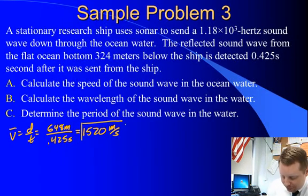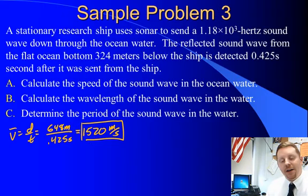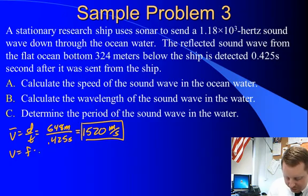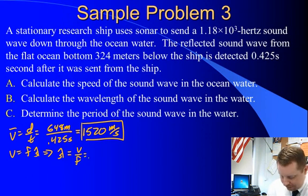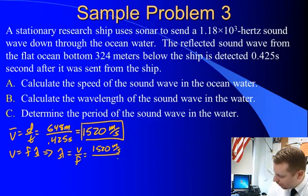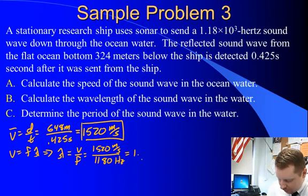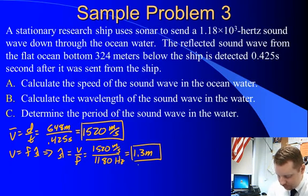Now for part b, calculate the wavelength of the sound wave in the water. In this case, we can use our wave equation, v equals frequency times wavelength, or wavelength equals velocity over frequency. 1520 m per second over our frequency of 1180 Hz is about 1.29, 1.3 m. So we've found our wavelength of the sound wave in the water.